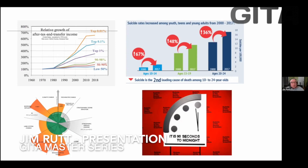Income inequality has gone crazy in the United States since 1975. Suicide is the second leading cause of death amongst 10 to 24-year-olds.